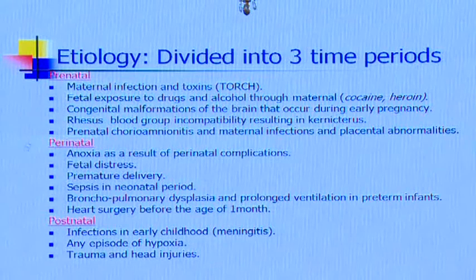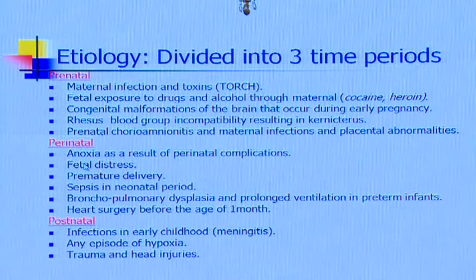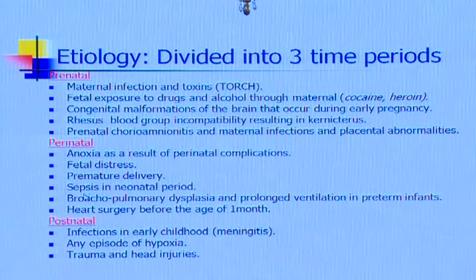In the perinatal group, we have anoxia, which is the important cause, fetal distress, prematurity, sepsis in the neonatal period, bronchopulmonary dysplasia that happens in premature children, and also if a child is severely ill and has to have some operative procedures.